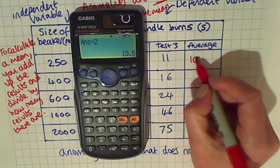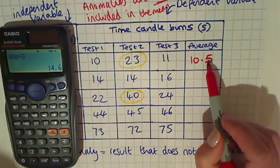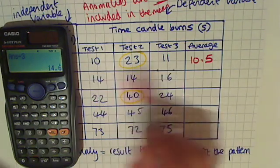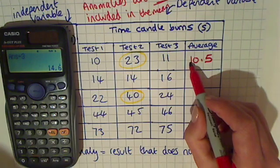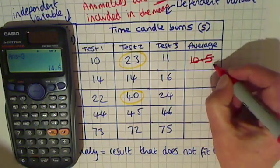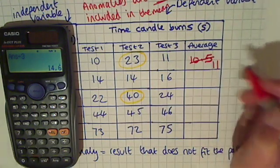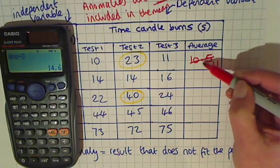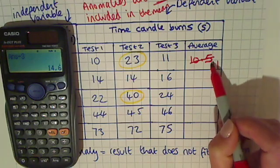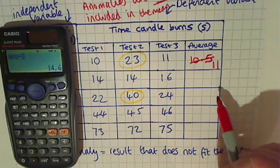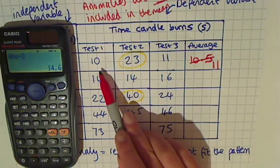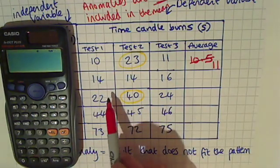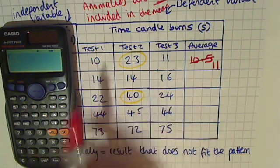So in my averages column, I can now put 10.5. But actually, because my answers are whole numbers, I can round this one up to 11. When you have the number after a decimal point which is five or bigger, you round up to the nearest whole number. So I would write down my average as 11.